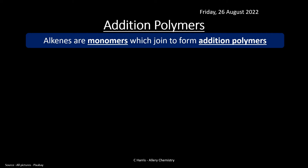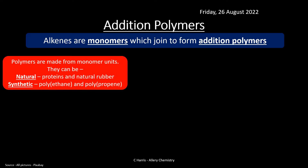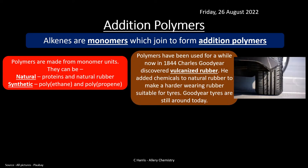Monomers are single units that join together to form addition polymers. The monomers are the smaller building blocks that make up the long chain, and they can be natural — such as proteins and natural rubber — or synthetic, like polythene and polypropene. There are loads of different types, but we are going to look at addition polymers here.